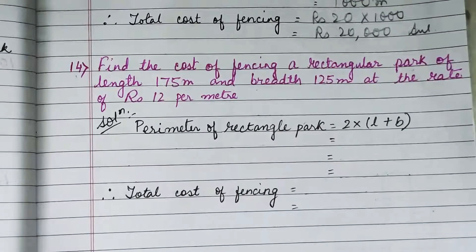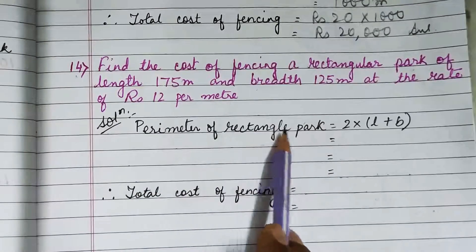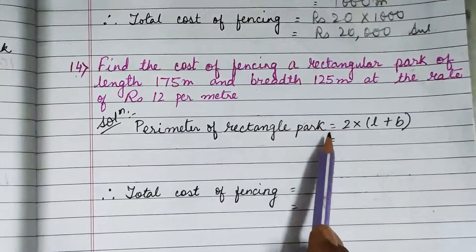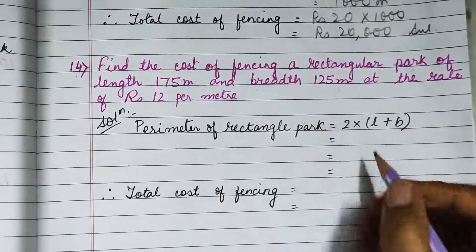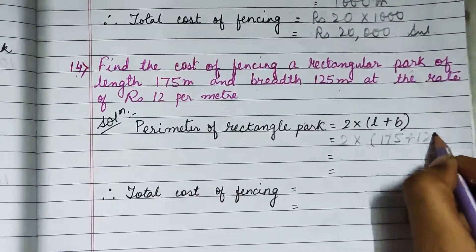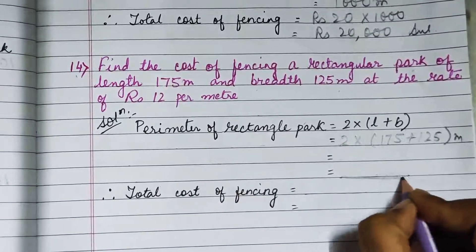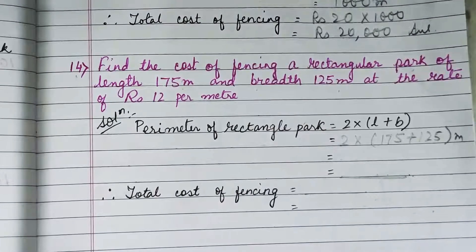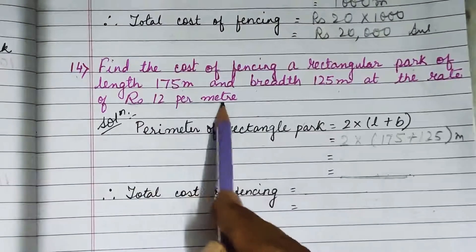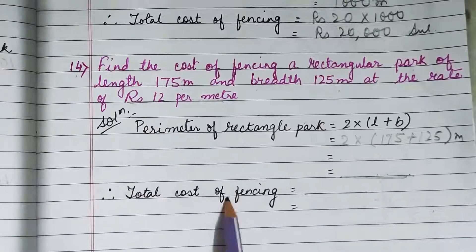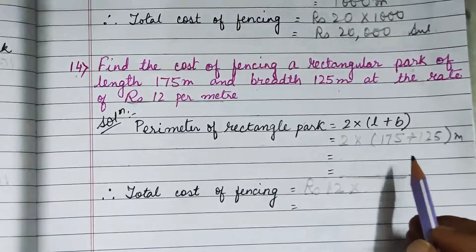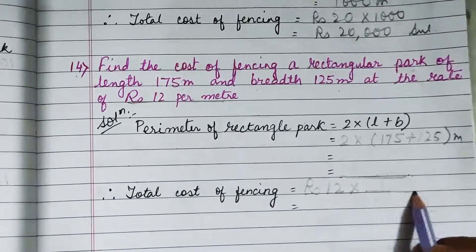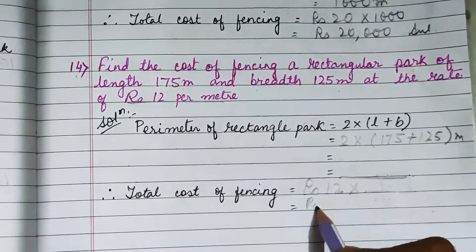We will solve this just like question 13. First we find the total length of fencing, which equals the perimeter of the rectangular park using the formula 2 into (length plus breadth). Length is 175 and breadth is 125 meters, so it is 2 into (175 plus 125). Calculate the perimeter yourself. The rate of fencing is rupees 12 per meter, so total cost equals rupees 12 multiplied by the perimeter.